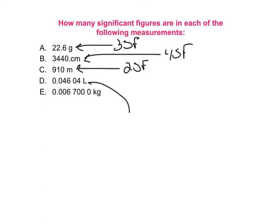For D, I have a bunch of zeros. I find my non-zero digits. The zero in the middle counts because of the sandwich rule, so those four numbers count. Anything to the left does not count — those two zeros are to the left and don't count. I have no zeros to the right to worry about. So there are 1, 2, 3, 4 significant figures in that number.